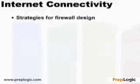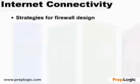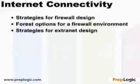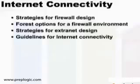Specifically, if we're going to be using the Internet as a connection between branch offices with a VPN, we need to understand how those Internet connections should work and what our firewall strategies are. We also need to identify our forest options for a firewall environment to make sure replication functions through firewalls, and whether an extranet is part of the equation for partners or vendors connecting across the Internet.